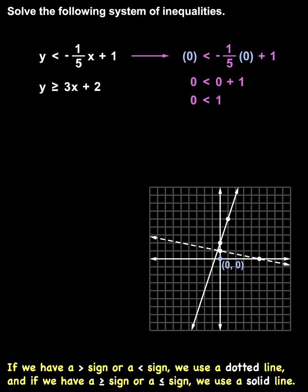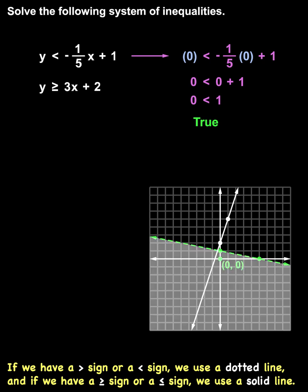Notice that 0 is less than 1 is a true statement. This means that our test point (0, 0) is a solution to the first inequality. So we shade in the direction of (0, 0) along our first boundary line.